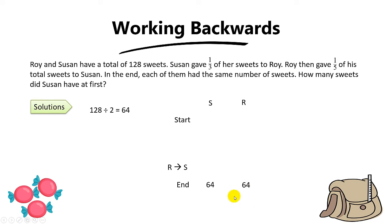Now, this 64 sweets for Roy is after Roy gave one-fifth of his sweets to Susan. My question to you is, if Roy gave away one-fifth, what fraction of his sweets does he have left? The answer is four-fifths. Make sense? You simply take one minus one-fifth, you get four-fifths.